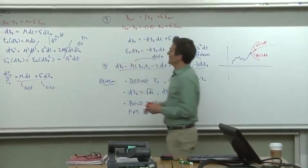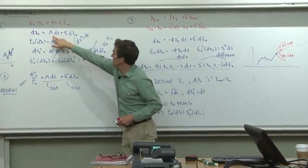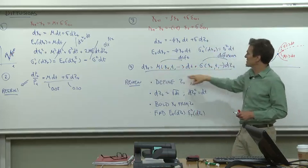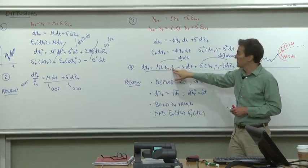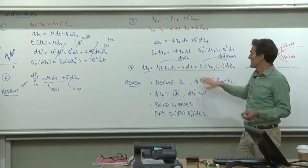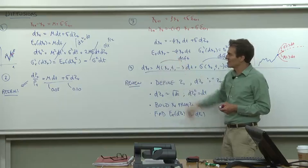So for example, this diffusion just has constant coefficients. Whereas this diffusion allows the coefficients to be functions of state variables, x itself, functions of time, or functions of other variables that are going on. That's how you build great generality into it.